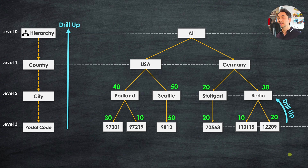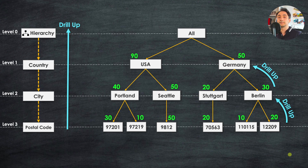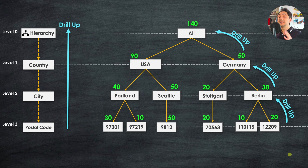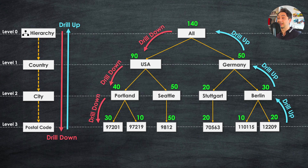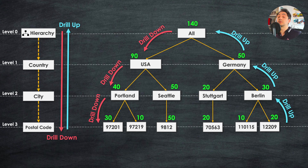As we move higher, values become more aggregated. Using drill up again to move from city to country: Germany has total sales of 50 and USA has 90. Using drill up once more takes us to the root node — the highest level of aggregation — showing 140 total sales. Hierarchies organize and structure dimension members into a logical tree structure, and drill up and drill down give dynamics to your views, letting you see the big picture and drill into specific details.